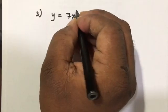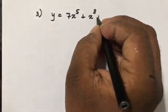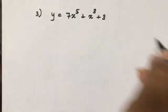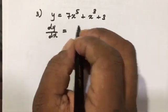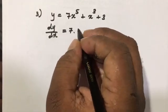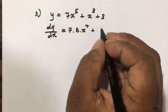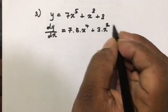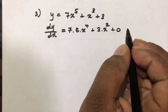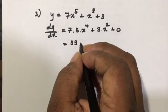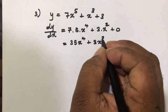Example number three: y equals 7x to the fifth plus x cubed plus 3. The derivative dy/dx equals 7 times 5 times x to the fourth plus 3 times x squared plus 0, so the answer is 35x to the fourth plus 3x squared.